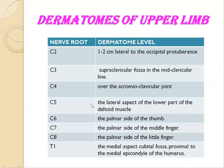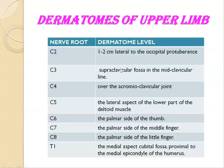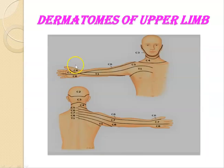C5 is at the lateral aspect of the lower part of the deltoid muscle. C6 is at the palmar side of the thumb, C7 at the middle finger, and C8 at the little finger. You can see these levels in the diagram depicting C6 thumb, C7 middle finger, and C8 little finger.